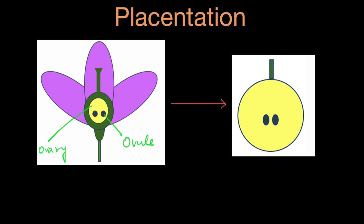Placentation is different in different types of plants. That's why you see the seeds arranged in different ways in different types of fruits, because the arrangement of the ovules remains the same when the ovules turn into seeds.